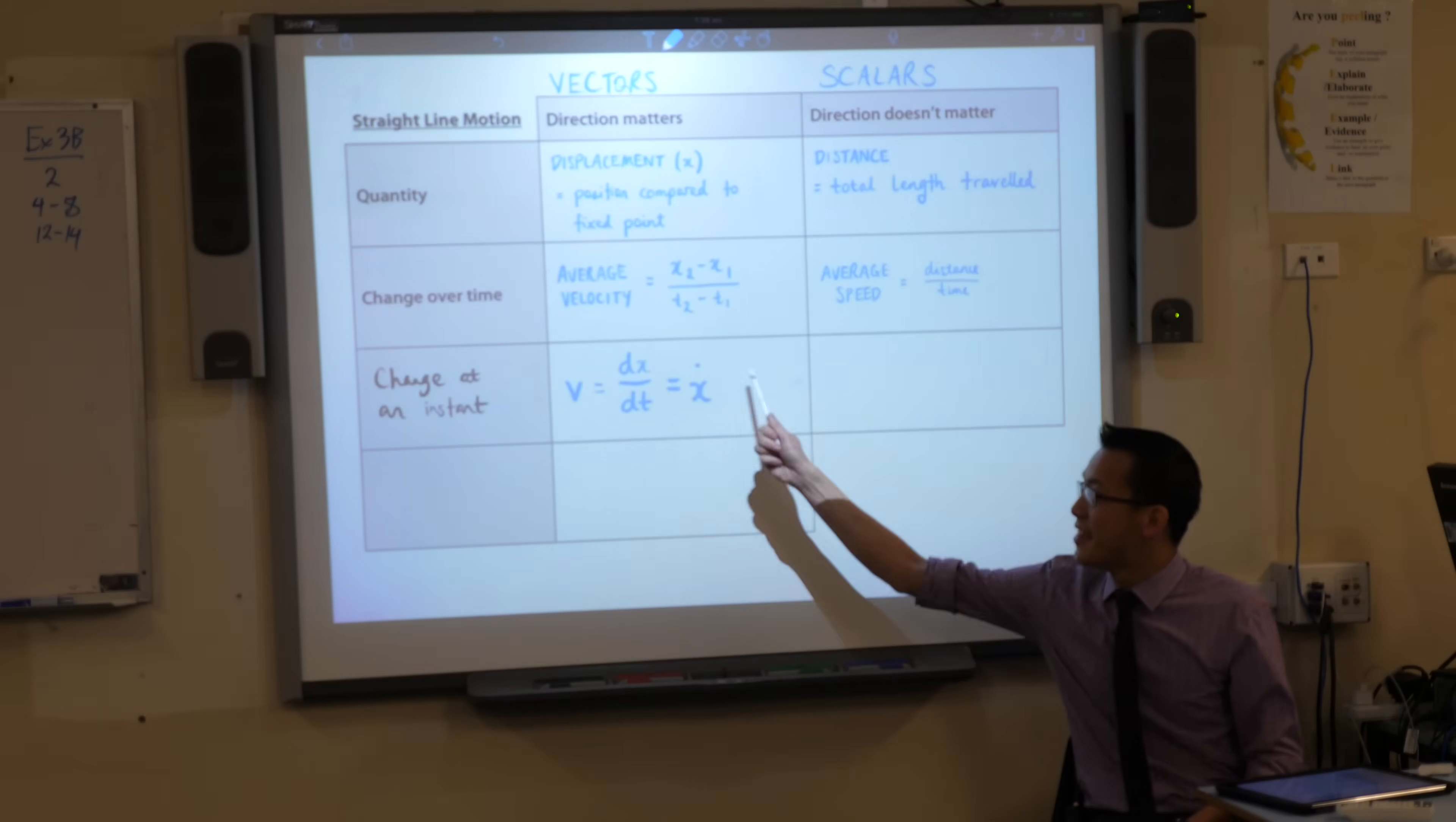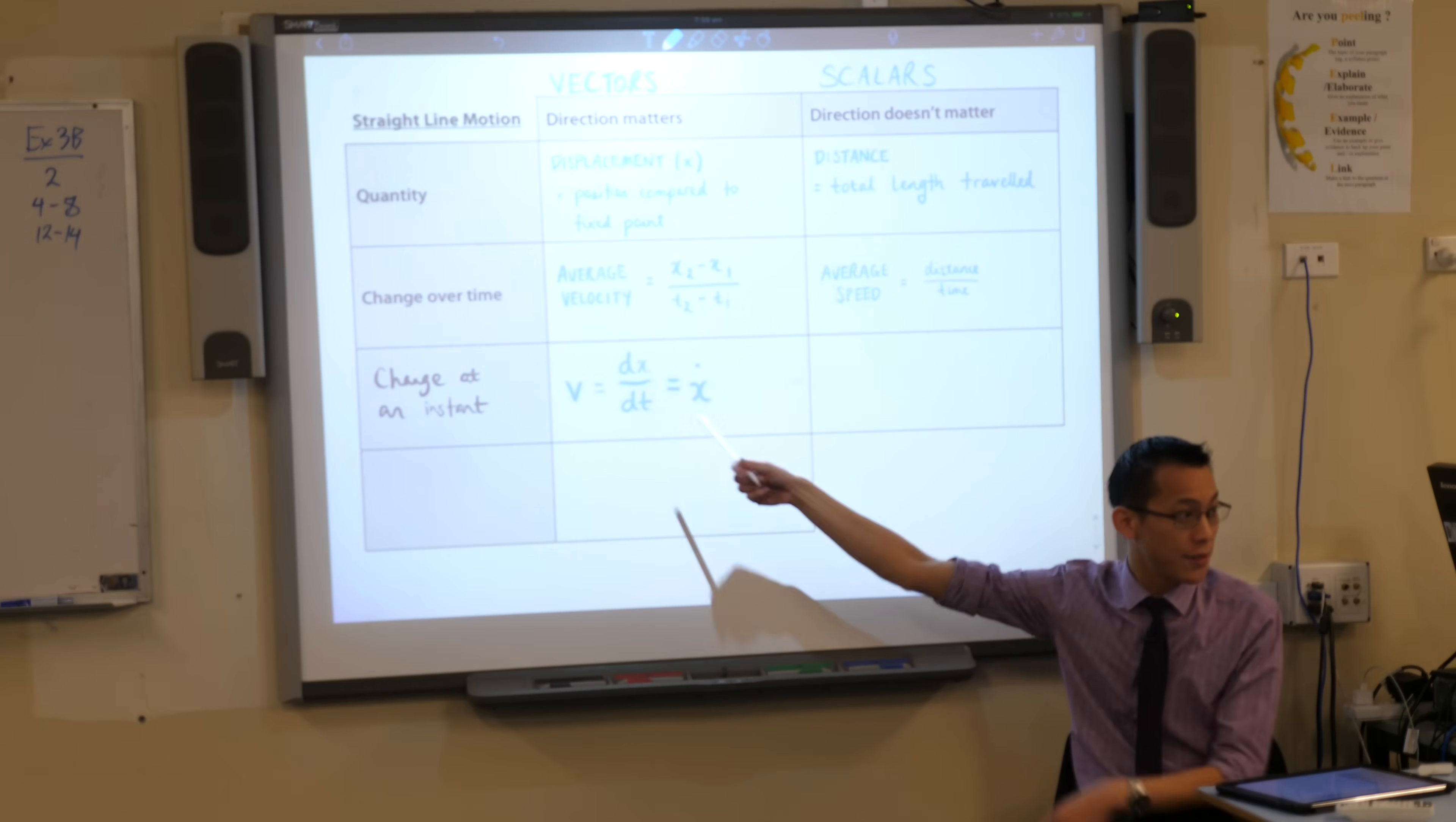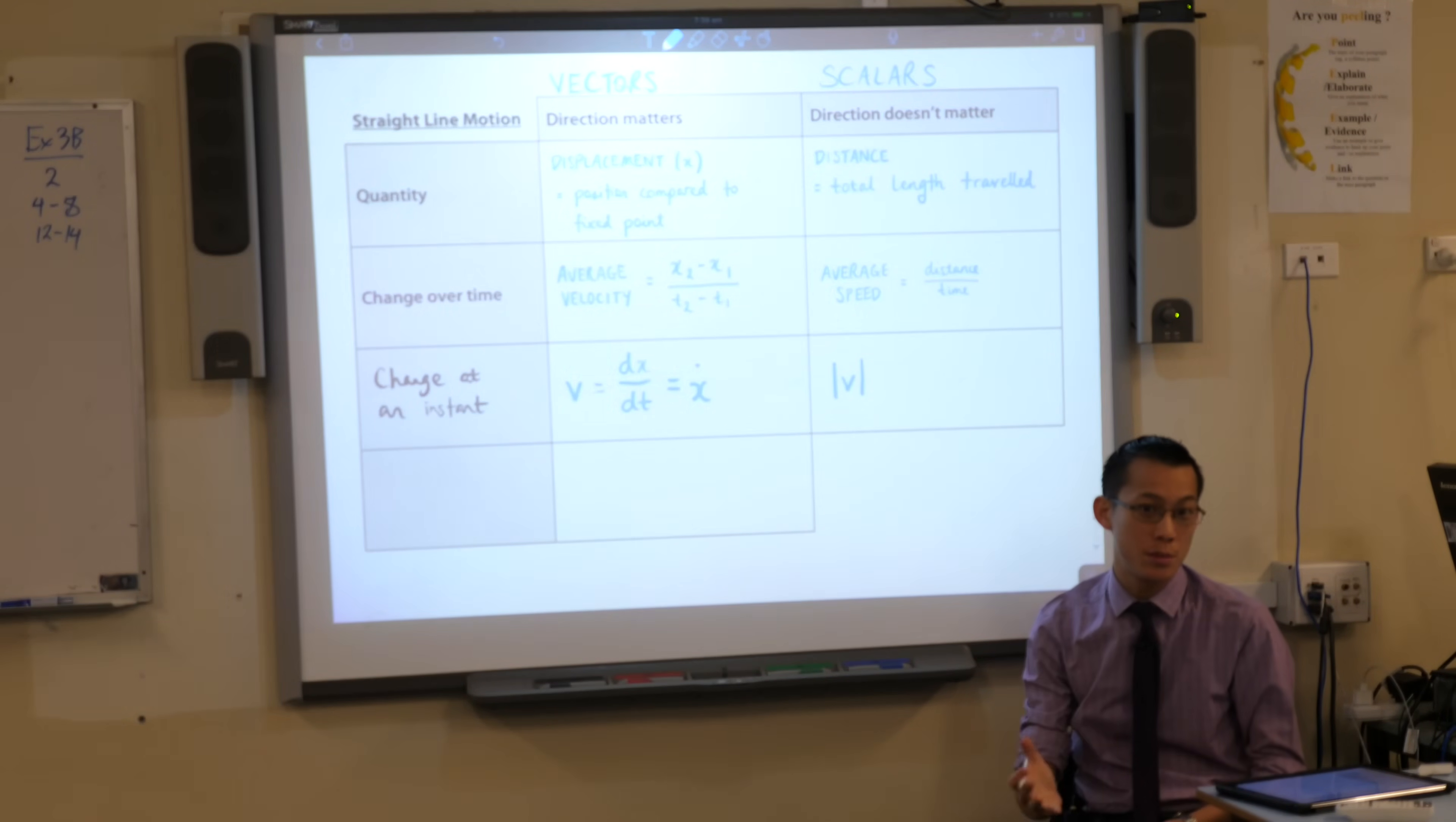Now this is going to be a value and it's going to have positive or negative which indicates its direction. But if we want to think about when direction doesn't matter, all you have to do is take this derivative, take its value and say don't worry about whether it's positive or negative. Take the absolute value and you're there.